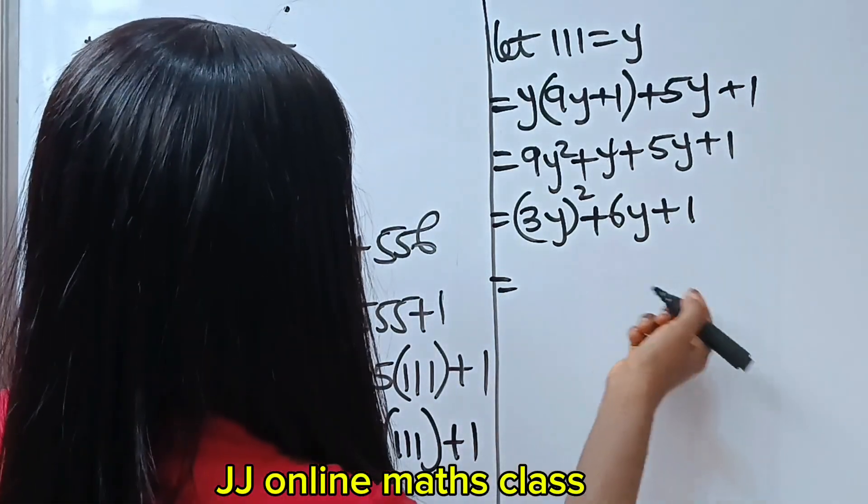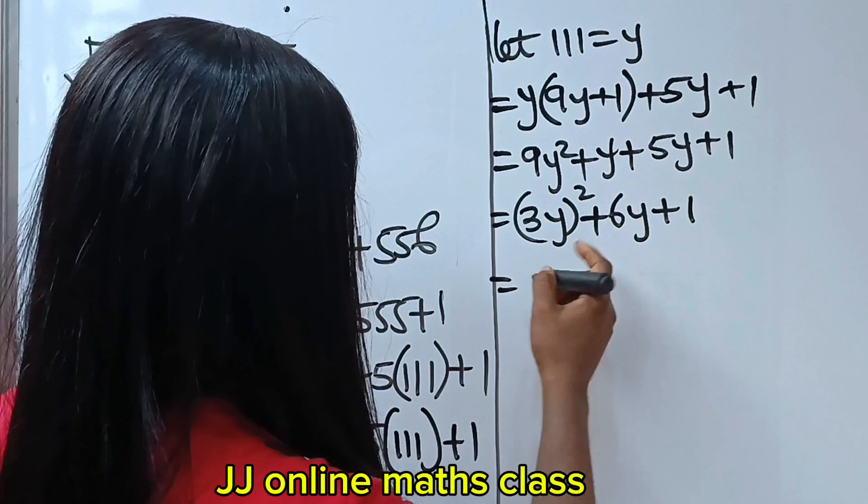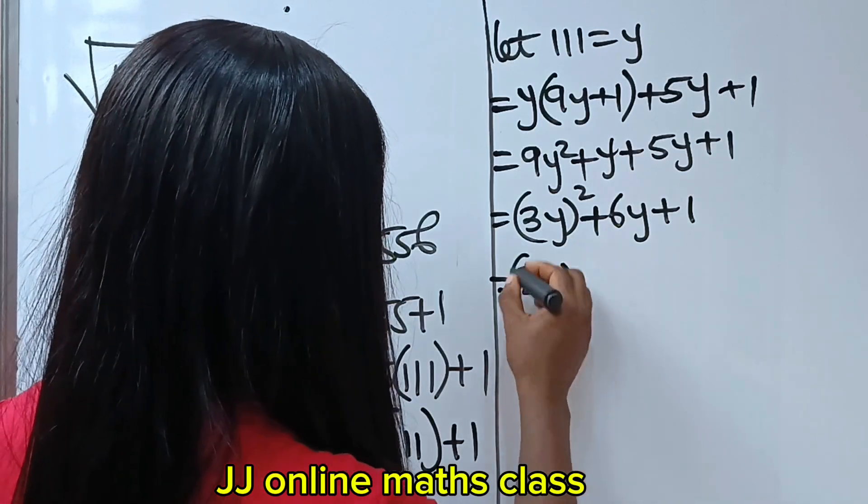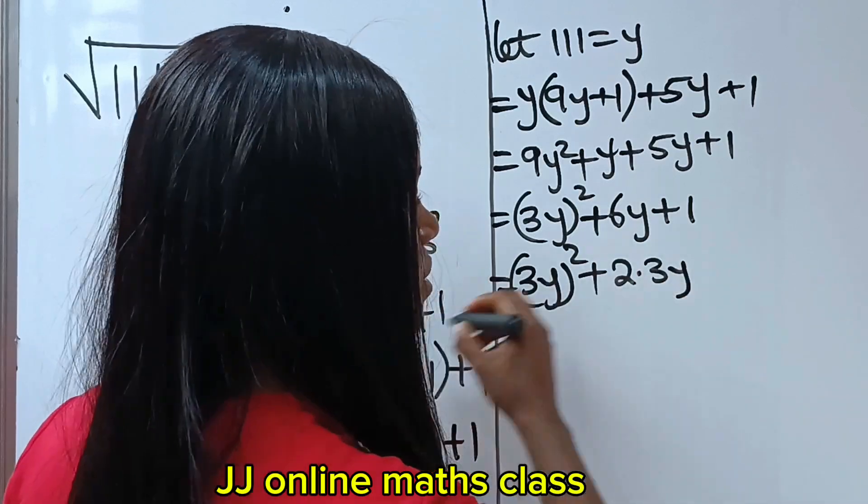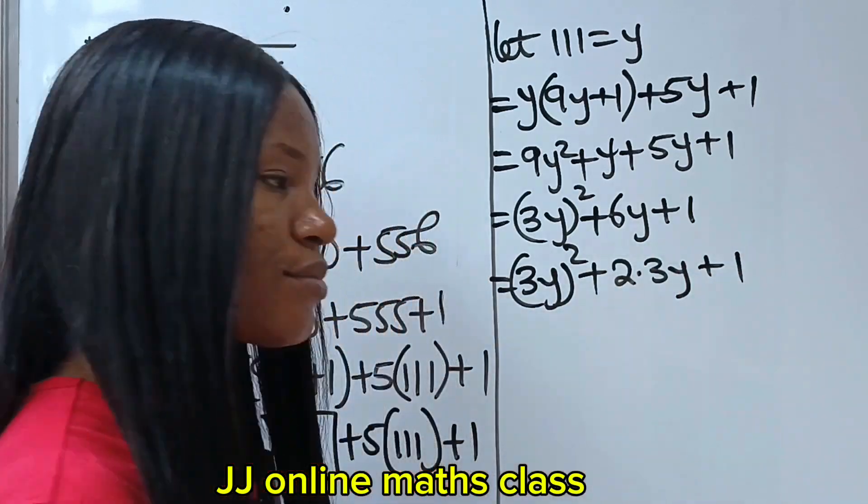So, this is it. Now, we can write this as what? This is 3y squared plus, now this can be written as 2 multiplied by 3y, then plus 1.